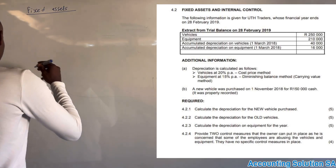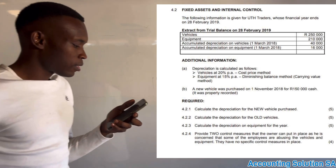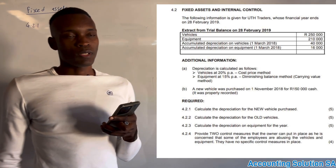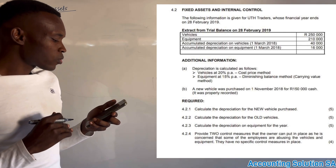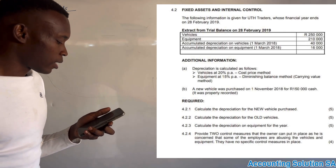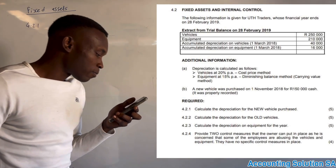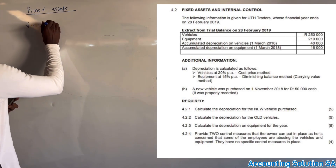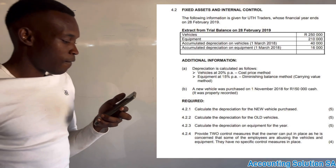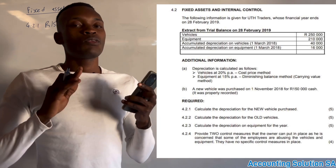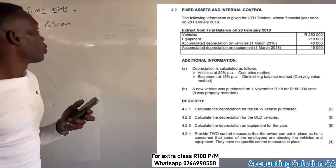Question 4.2.1: Calculate depreciation for the new vehicle purchased — five marks. The new vehicle was purchased on 1 November for R150,000. Remember, vehicles use the cost price method, which means there is no need to subtract accumulated depreciation. We simply multiply by 20%.